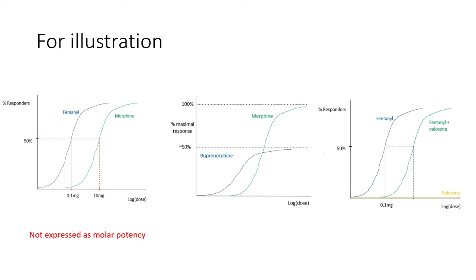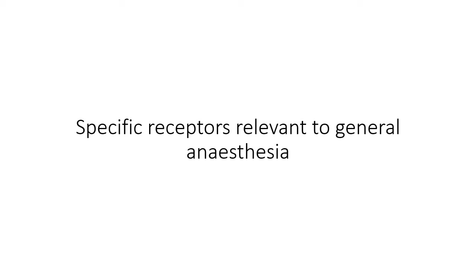To summarise all this, good luck running Remi on your patient who is taking Suboxone. We will now briefly review the function of a couple of receptors important in anaesthesia, namely the GABA-A receptor and the NMDA receptor.